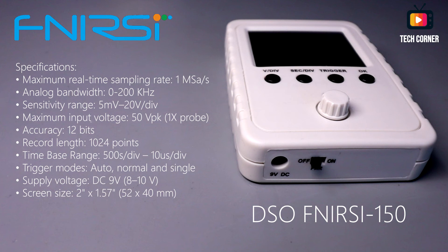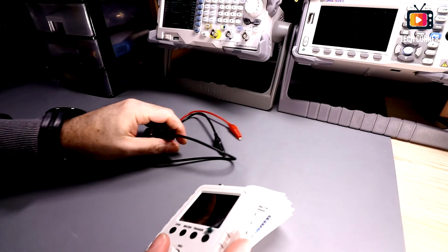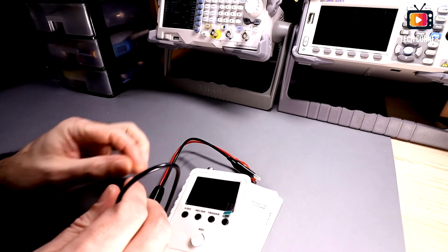It has a record length of 1024 points with a time range from 10 nanoseconds per division to a maximum 500 seconds per division with three trigger modes: Auto, normal and single. You should use a 9 volts power supply to power it up. And it has a 2.57 inches or 52 by 40 millimeters screen size. Let's start by reviewing what came in the box with this device.